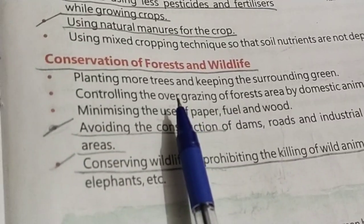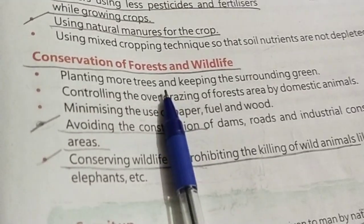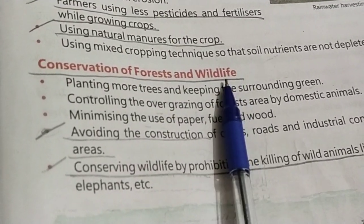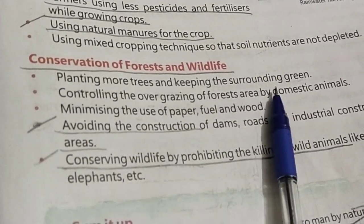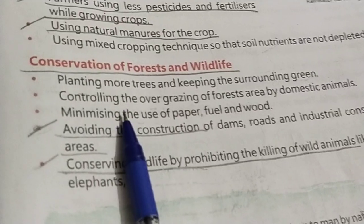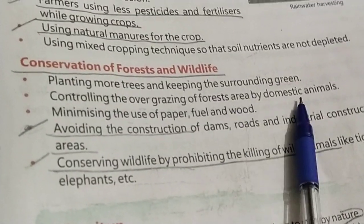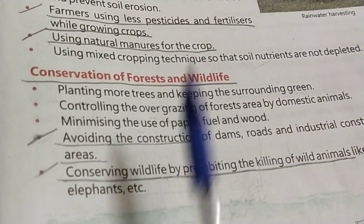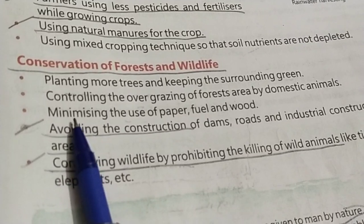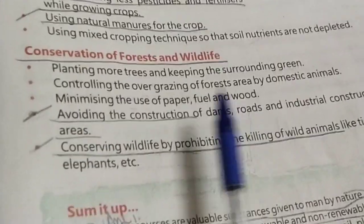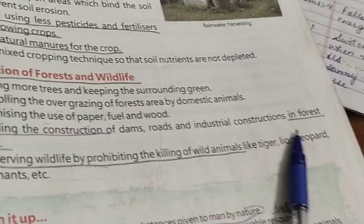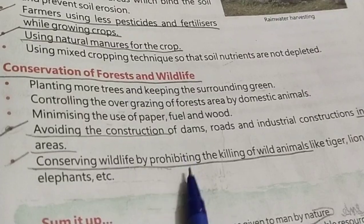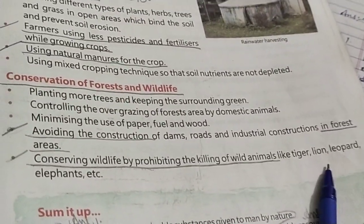For forest and wildlife conservation: We are cutting trees day by day, making forests disappear. We should plant more trees, keep surroundings clean and green, and control overgrazing by domestic animals. Overgrazing should be controlled, and we should minimize use of paper fuel wood. We should avoid construction of dams, roads, and industrial buildings in forest areas.